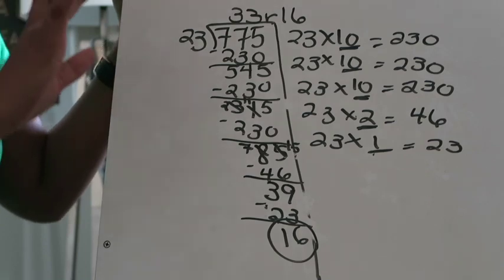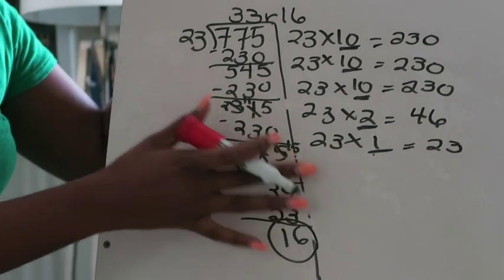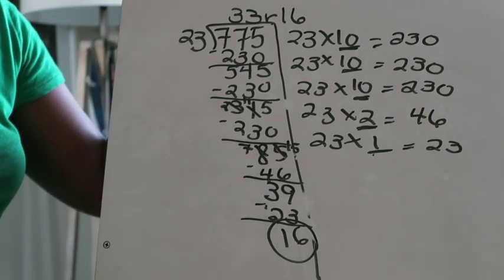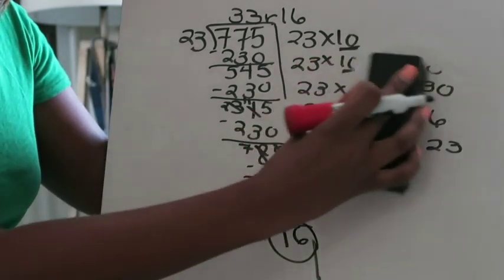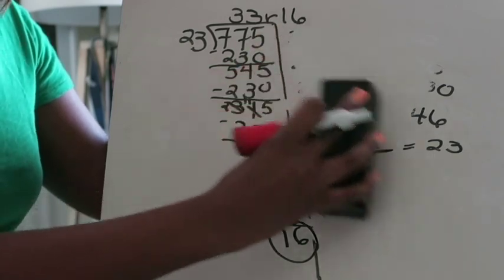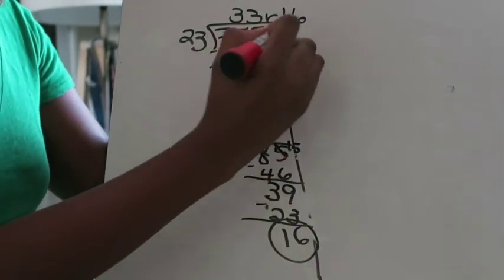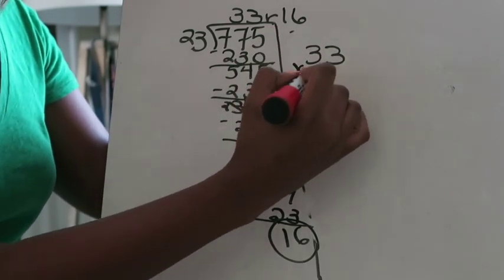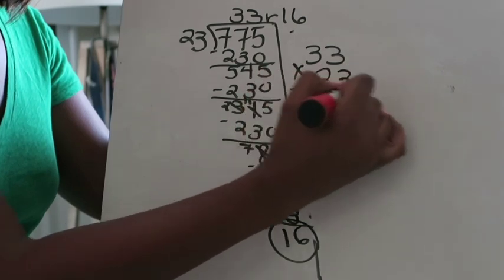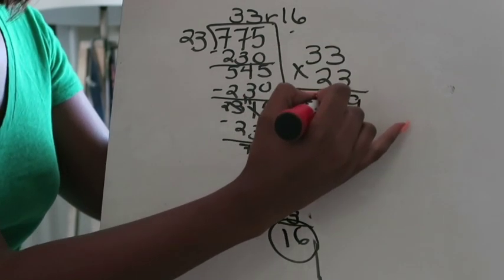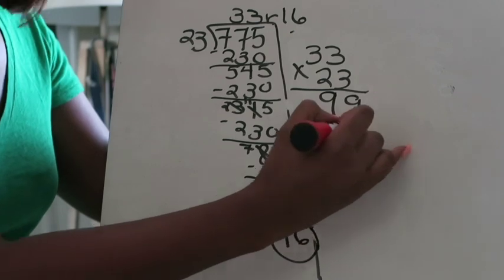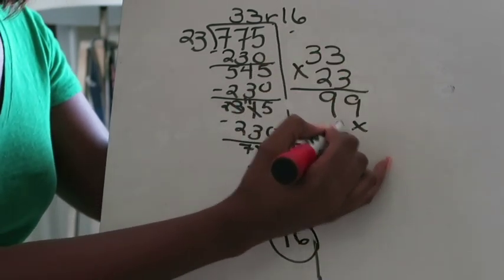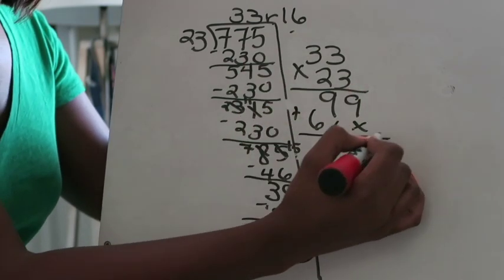So I've solved the problem. This is just a strategy that makes that long division problem a little bit easier. But even though we're using partial quotients we're still going to check our work. We're going to take our quotient which is 33 and multiply that by 23. 3 times 3 is 9, 3 times 3 is 9. Put your placeholder there because we're now moving to the tens. 2 times 3 is 6, 2 times 3 is 6.